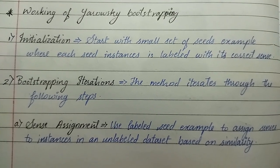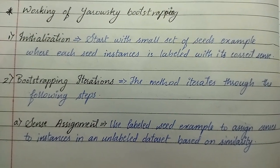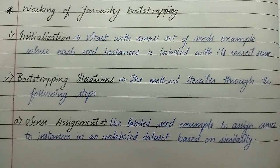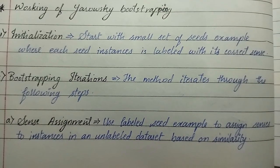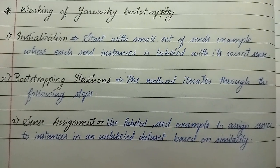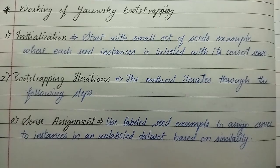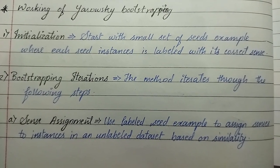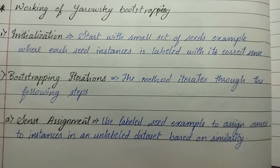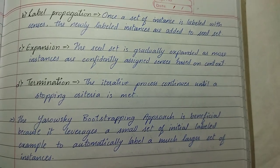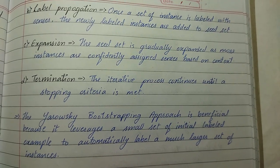Now we'll see the working of Yarowsky bootstrapping. First, initialization: start with a small set of seed examples where each seed instance is labeled with the correct sense. Second, bootstrapping iterations: the method iterates through the following steps. A) Sense assignment: use labeled seed examples to assign senses to instances in an unlabeled dataset based on similarity. B) Label propagation: once a set of instances is labeled with senses, the newly labeled instances are added to the seed set.